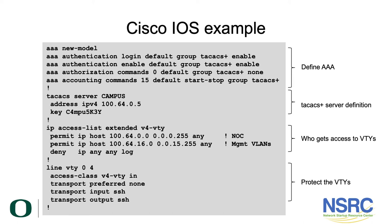We've defined an access list called 'v4-vty' which specifies which address space is allowed access to the VTY ports on this router. We've allowed the NOC address space — a slash 24 — and the management VLAN address space. Everything else is denied with a log option, so every other access attempt is logged, giving us visibility into who is attempting to access our devices.